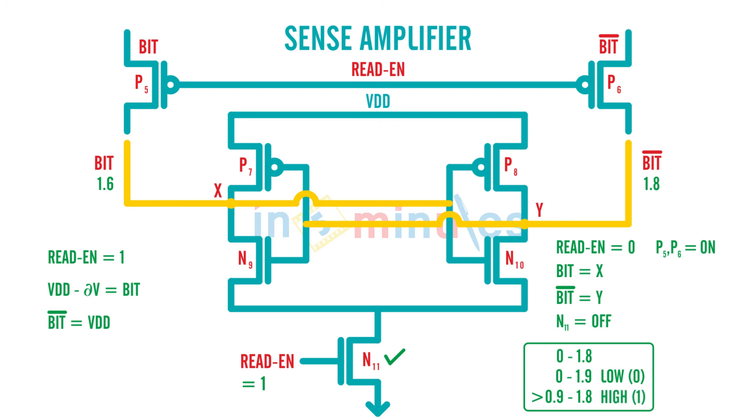So in this case, 1.6 and 1.8 both are considered as logic value high. Is everyone with me till here? That's the fun and that's the beauty.